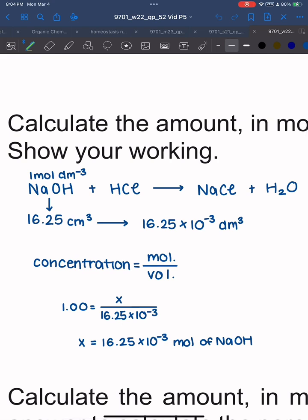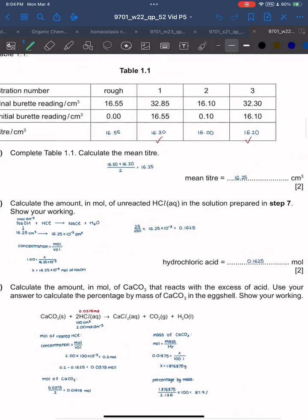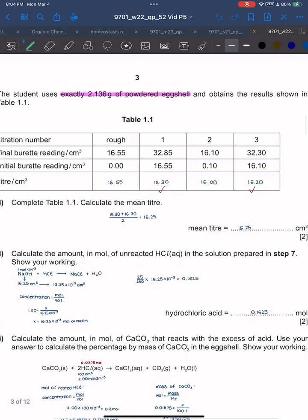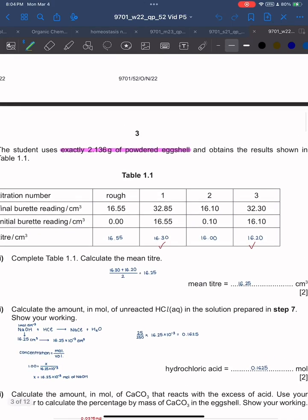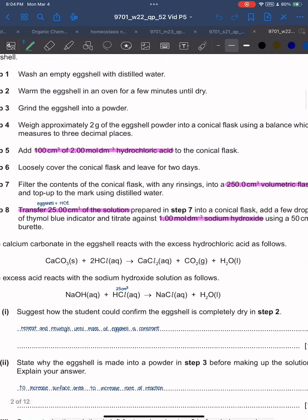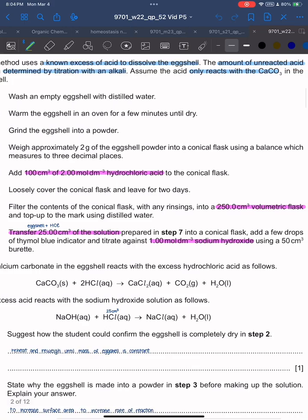Convert the cm³ into dm³, then use the formula concentration equals mole over volume. Multiply 1 times 16.25 times 10⁻³. Now they want the hydrochloric acid, so this is the number of moles of NaOH. Reference it to hydrochloric acid using the 25 cm³ over 250 cm³ ratio to get 0.1625 moles.